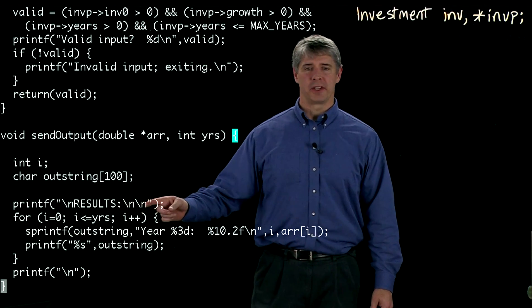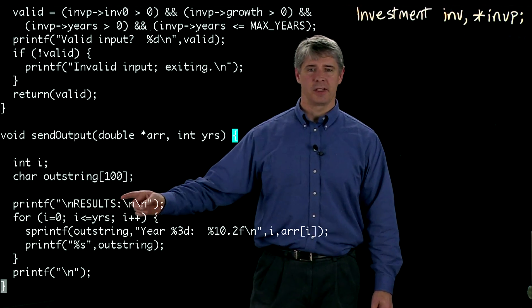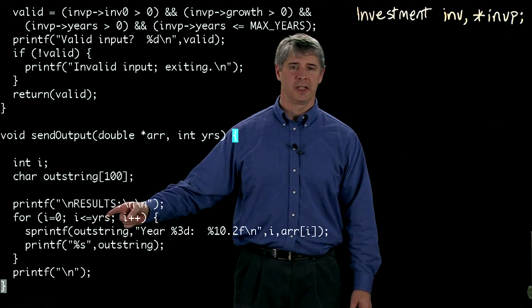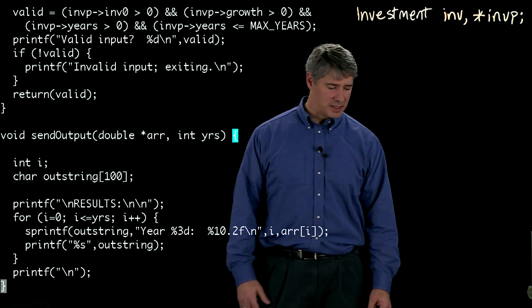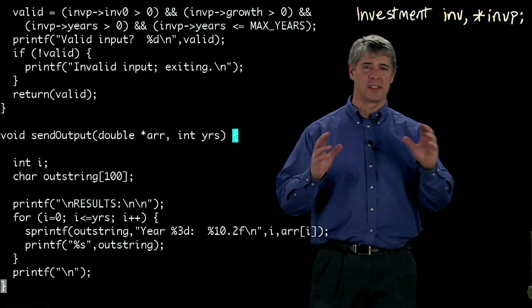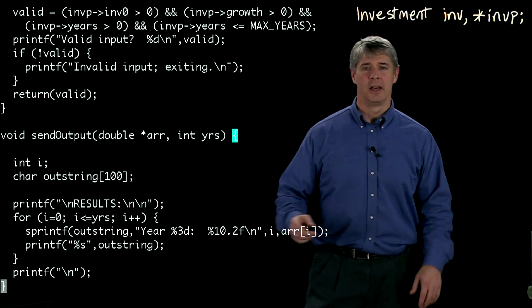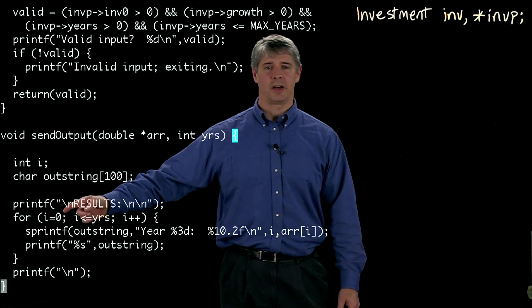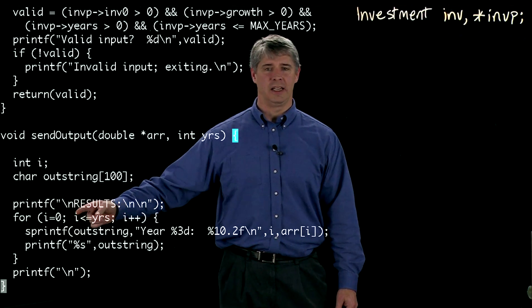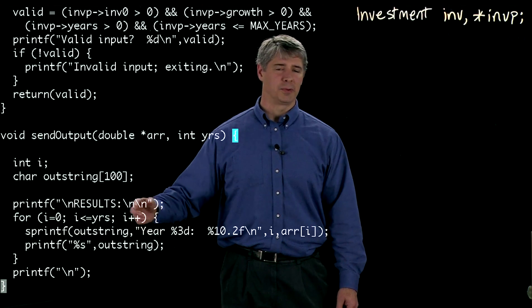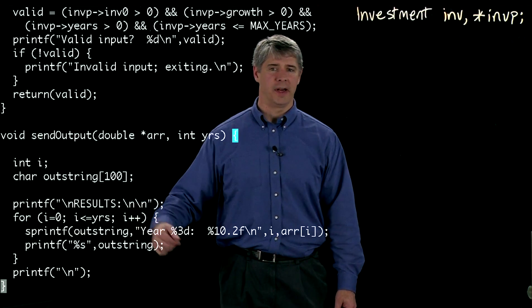And now we're going to print out the results here. So we print results. And then we count from i equals zero to the number of years. And i plus plus is C code. And all it means is i equals i plus one. It's a shorthand that's very common. So we're going to start with i equals zero. We're going to check to see if we're less than or equal to the number of years to track. And then once we go through the loop, we're going to add one to the value of i.